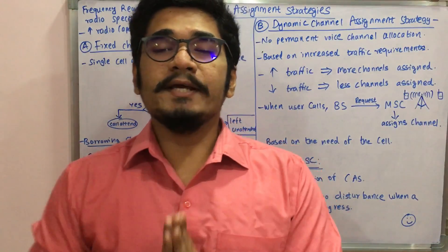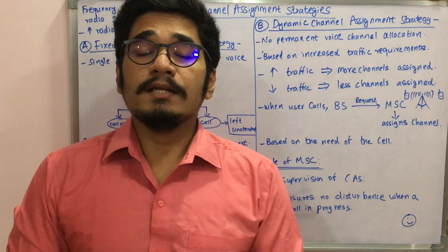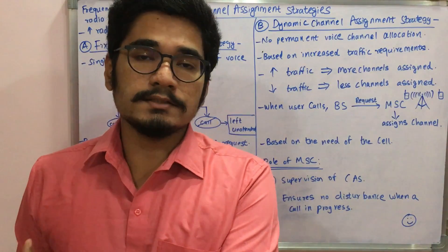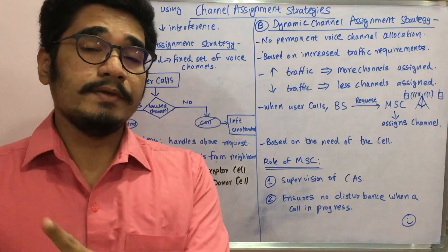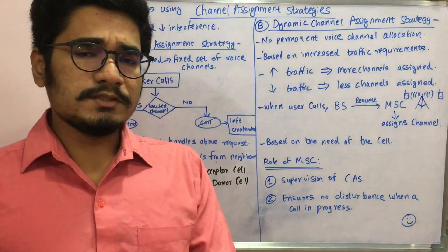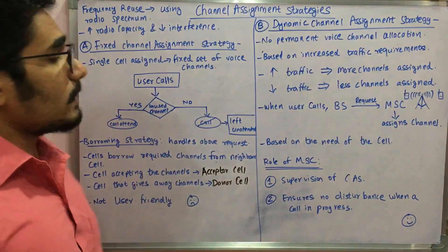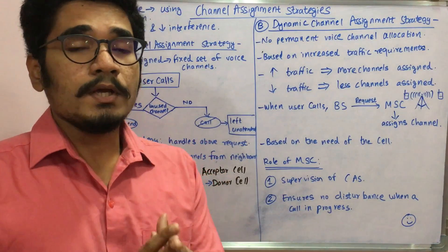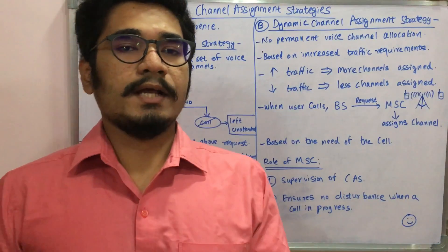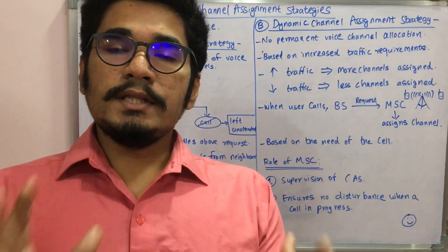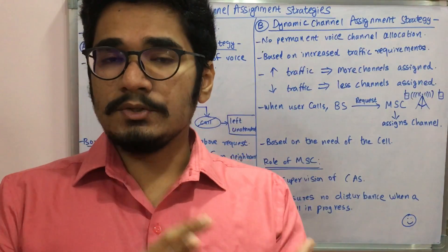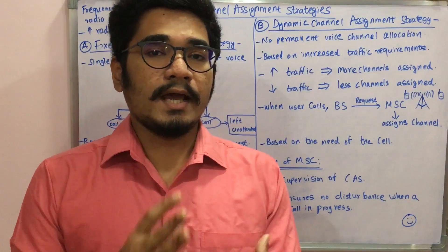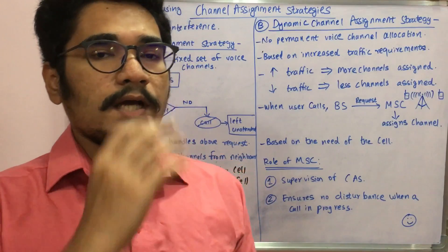Welcome back. Today we'll see another cellular concept used in wireless systems: channel assignment strategies. We've already seen what the frequency reuse technique does — its advantages include saving bandwidth and properly utilizing the radio spectrum, decreasing radio capacity, and eliminating or reducing interference. In the frequency reuse honeycomb structure, you have many cells with base stations and allocated channels and frequencies. This video covers how those channels are assigned and the different strategies for that allocation.